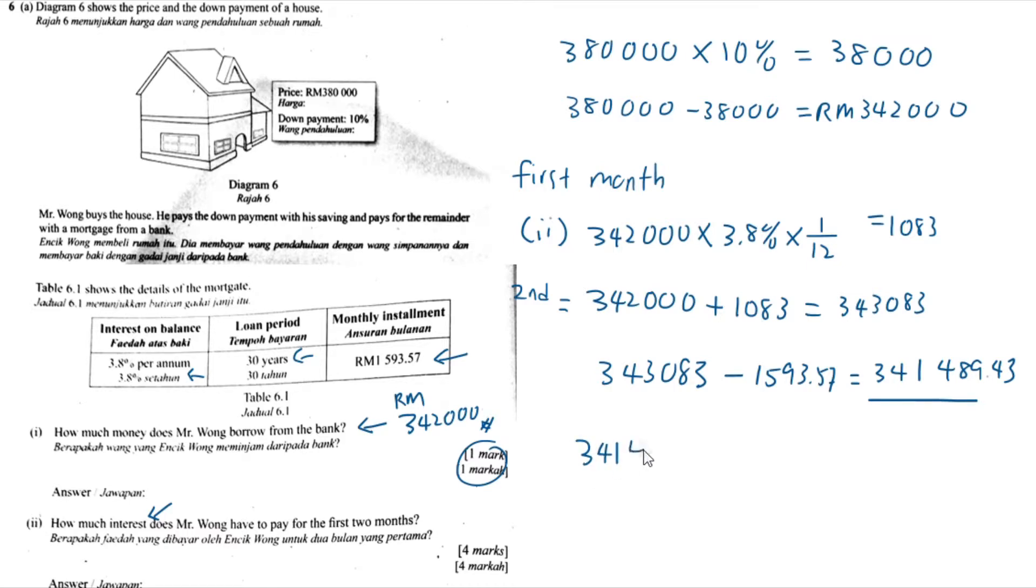So we use $341,489.43 times 3.8% times 1 over 12, which is also one month. And you will get 1083.38. So this is for second month.